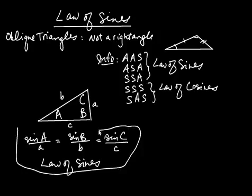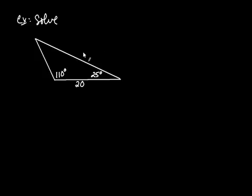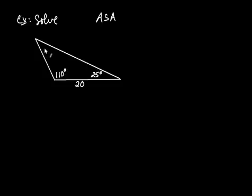Let's use law of sines on an example. We're in the ASA case because we have a side between two angles. I'll write down what's easy first: these two angles add to 135 degrees, so the third angle must be 45 degrees since all angles must add to 180. Let's call the unknown sides B and C.